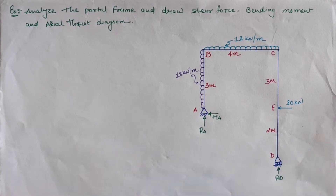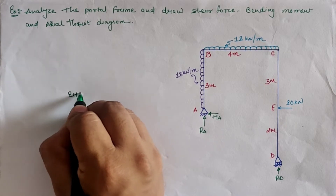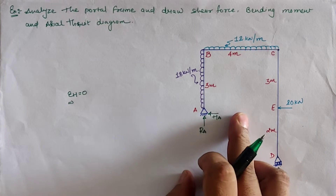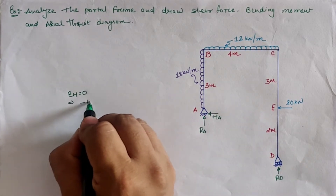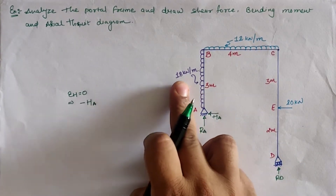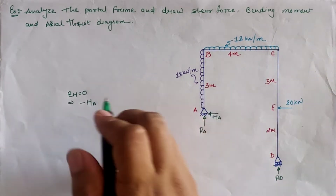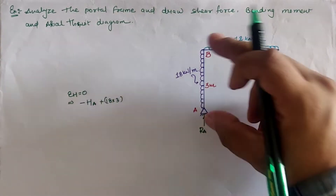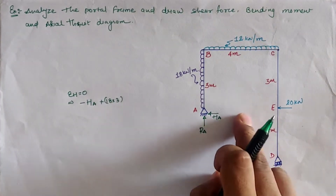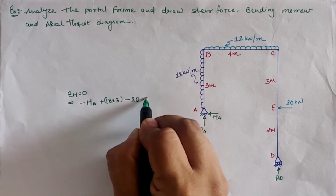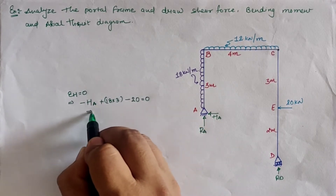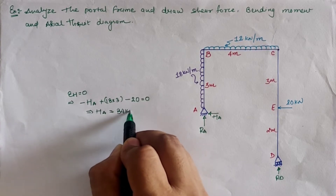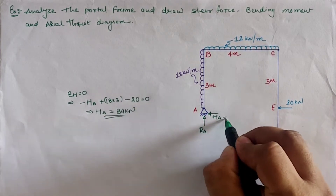Taking the first equilibrium equation, ΣH = 0: Ha is in the negative direction, so it is negative Ha. The UDL of 18 kN/m over span AB gives positive 18×3, and the 20 kN load is in the negative direction, so minus 20, equals zero. Solving this, Ha equals 34 kN.